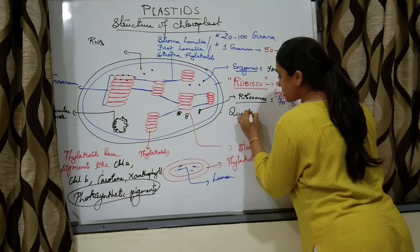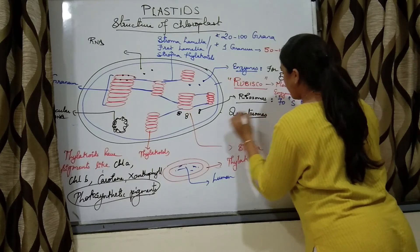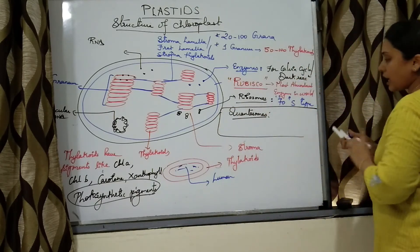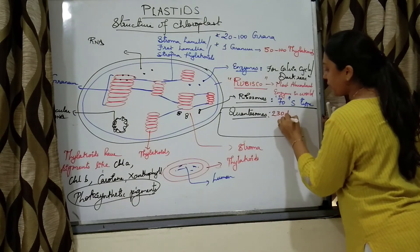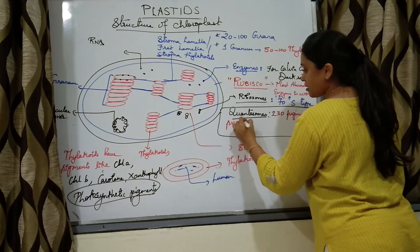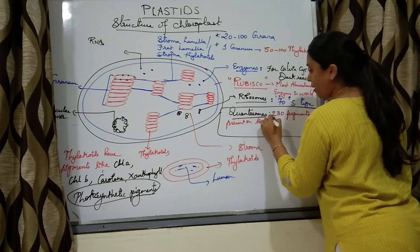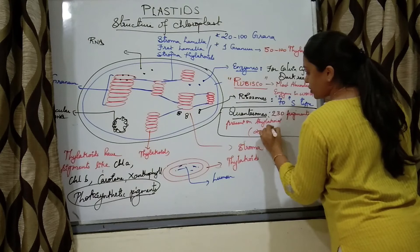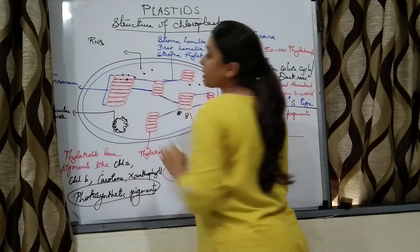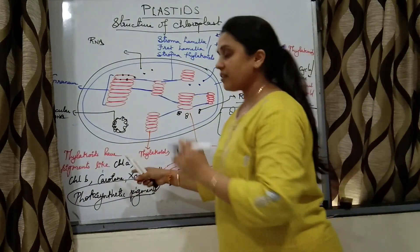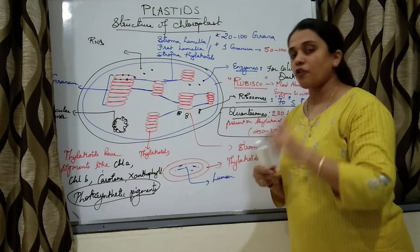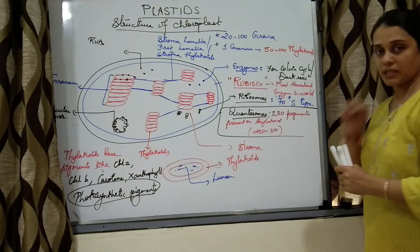One more important concept: quantosomes. Quantosomes are units of around 230 to 300 photosynthetic pigments present on the thylakoid membrane. Whether chlorophyll A, chlorophyll B, carotene, or xanthophyll — all these photosynthetic pigments together form one unit called a quantosome.